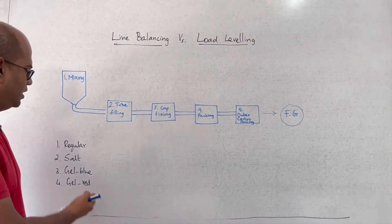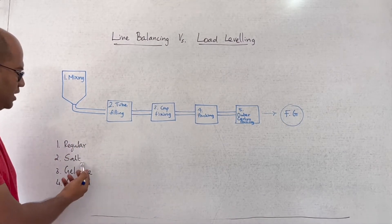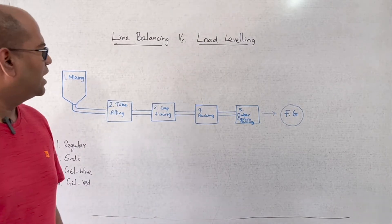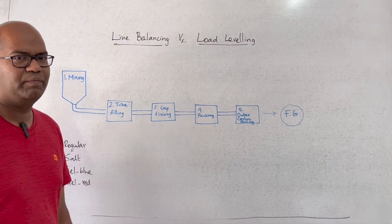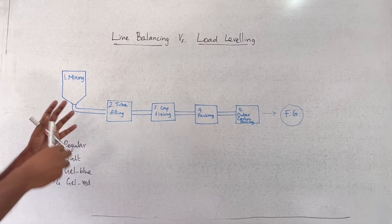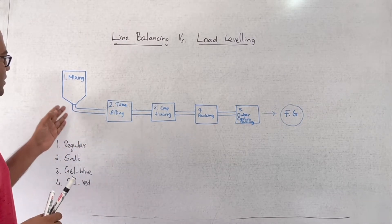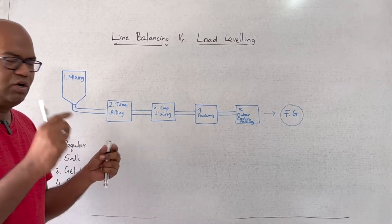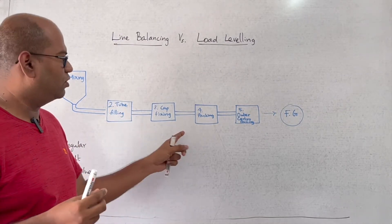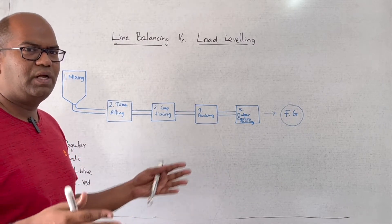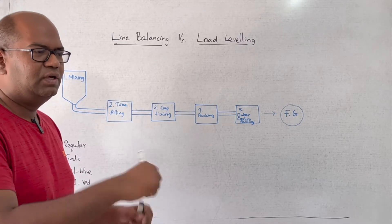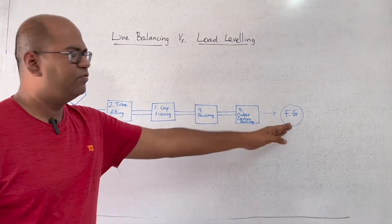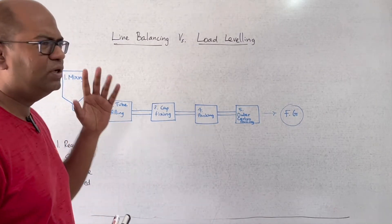There are 4 different products: regular toothpaste, salt, and gel. There are 5 processes. First is mixing — in a tank, we mix various chemicals and heat, so the paste will be ready. Second is tube filling. Third, we fix the cap. Then we pack it in a small box. Finally, we pack it into an outer carton. This is the toothpaste manufacturing process.